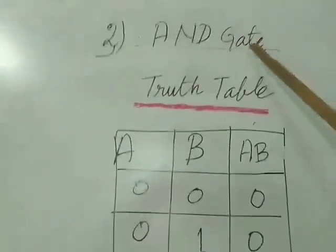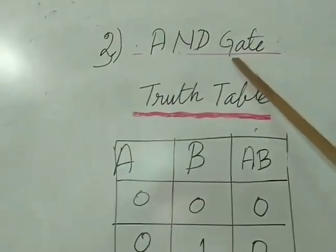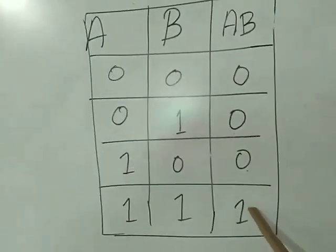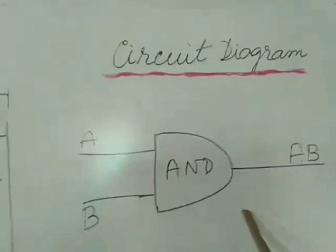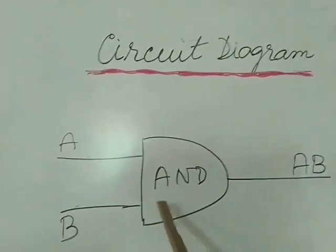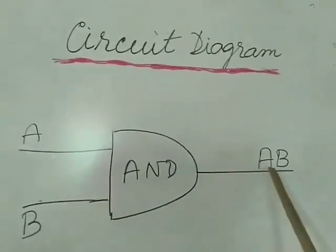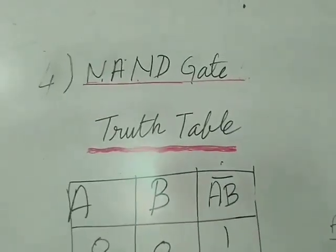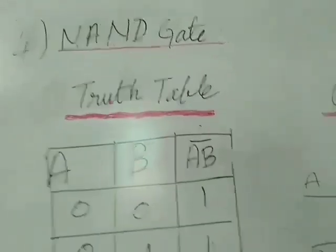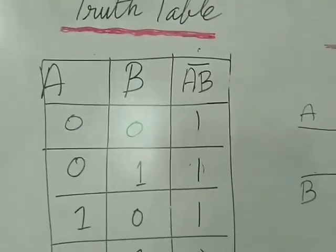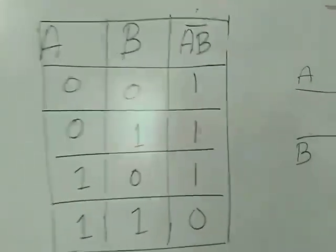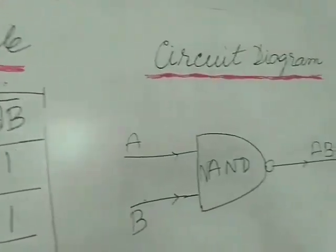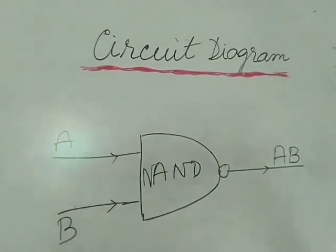The truth table for the AND gate — it performs normal multiplication. The circuit diagram for the AND gate shows A and B as the inputs, and the output is AB. The NAND gate truth table looks like this — the output is just the opposite of the AND gate. The circuit diagram for the NAND gate looks like this.